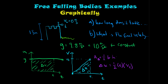Looking at the acceleration graph, the area of the rectangle is t times g. Since the initial velocity was zero, this is equivalent to vf = t·g. Plugging that in, displacement equals one half times g times t squared.